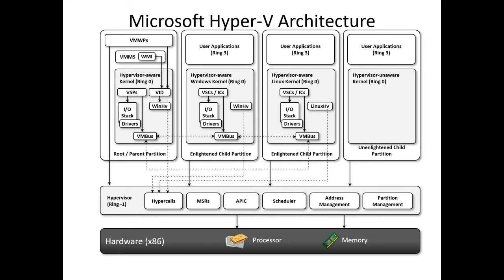The hypervisor handles interrupts to processors and redirects them to respective partitions. Hyper-V can also hardware-accelerate the address translation between various guest virtual address spaces by using an IO Memory Management Unit, also called IOMMU, which operates independently. Child partitions also do not have direct access to hardware resources.